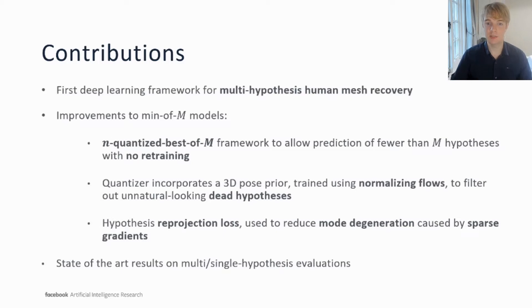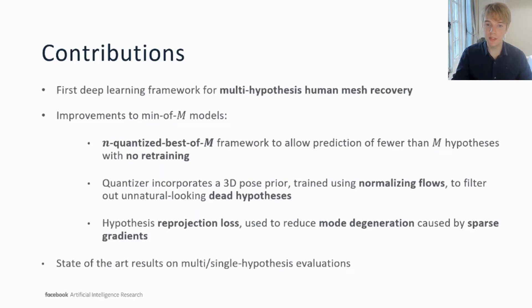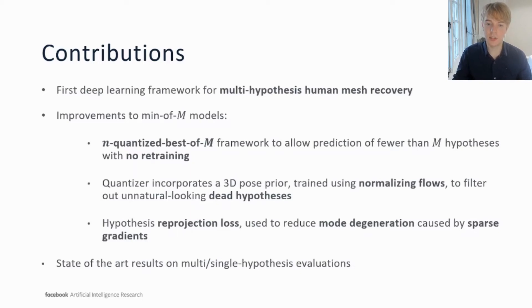This therefore provides the key motivation for our task of multi-hypothesis human mesh recovery, for which we provide the first deep learning framework. We also propose several technical contributions related to improving the so-called min-of-M training scheme. We first introduce a quantisation method, which improves the flexibility of such schemes by allowing us to produce an arbitrary number of hypotheses at test time without the need to retrain. We also weight the quantisation scheme with a 3D pose prior trained using normalising flows, which is adept at filtering out poor quality or dead hypotheses. Finally, we introduce the hypothesis reprojection loss, which is designed to discourage modes dying off, an effect that occurs due to the sparse gradients backpropagated by min-of-M style models, particularly when M is large.